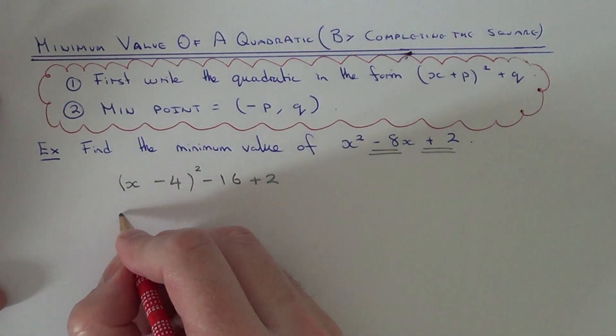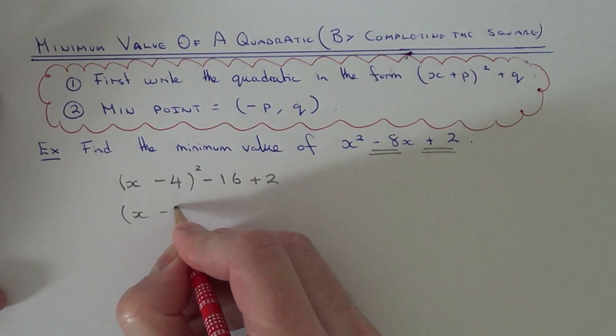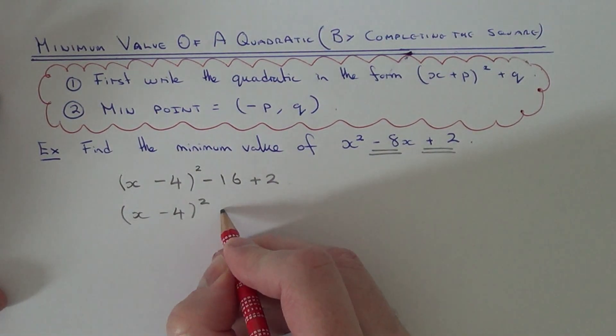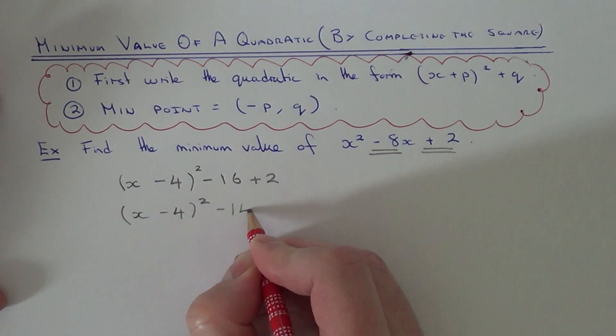So we just need to work the last bit out. So minus 16 add 2 is minus 14.